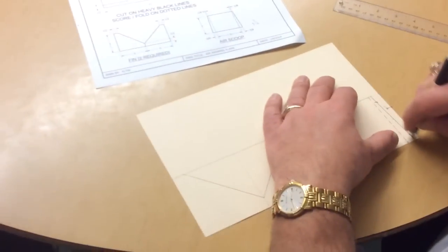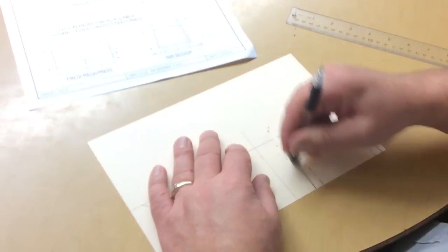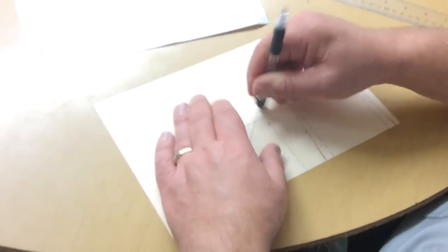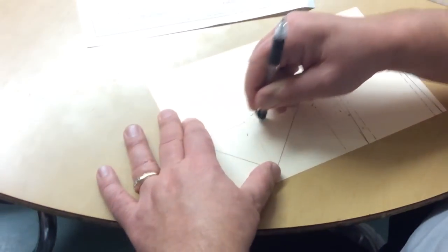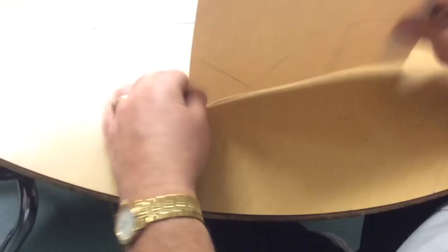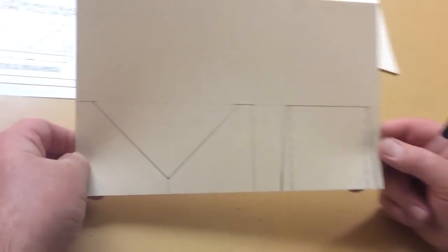So this is what yours should look like. I'm going to erase these so it looks more like what the plan does and any extra lines that we don't need, you can erase as well. So there's what your fins and your air scoop should look like and then you'll cut out around the dark.